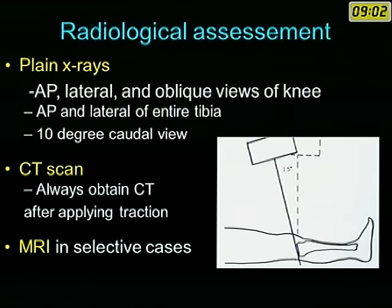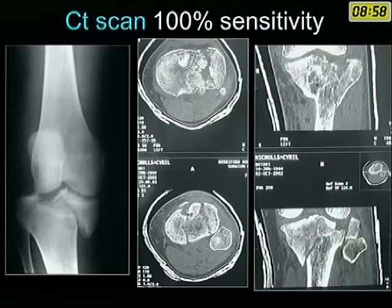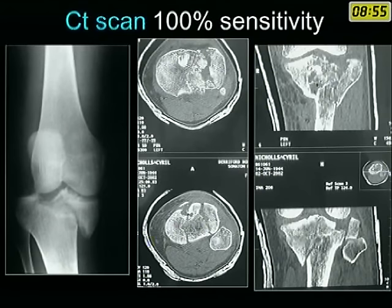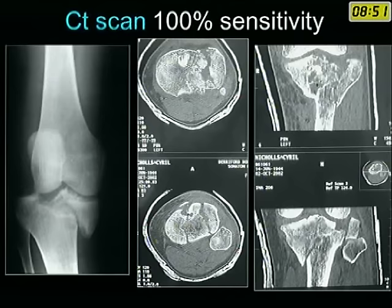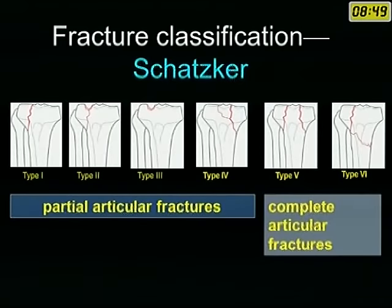MRI is indicated in ligamentous injuries in select cases, but not really a good tool in acute injuries. CT scan, especially taken with traction, is an important tool for planning management of these fractures besides X-rays.